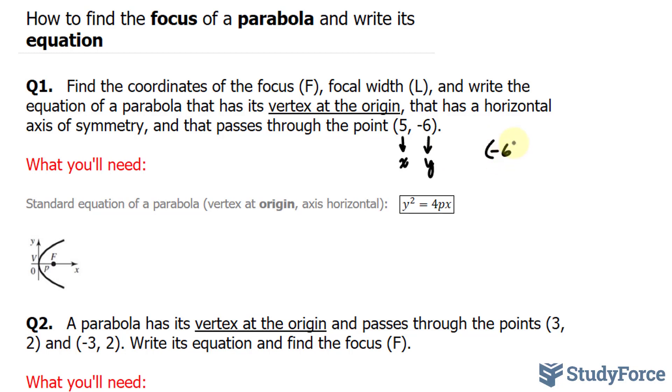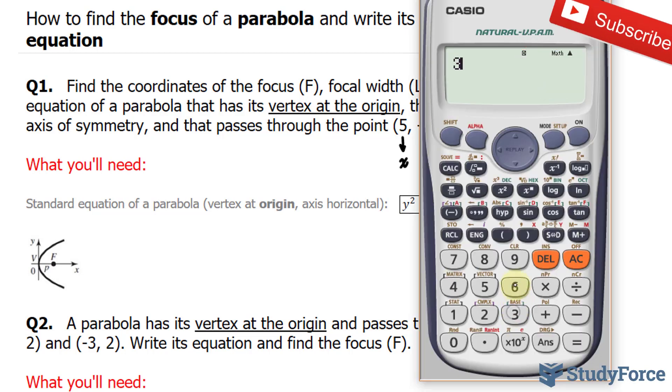(-6)² = 4 × p × 5. I'm going to clean this up a little bit and solve for p. (-6)² is 36, 4 × 5 is 20p. Divide both sides by 20, and 36 over 20 reduced, using our calculator, gives us 9 over 5.